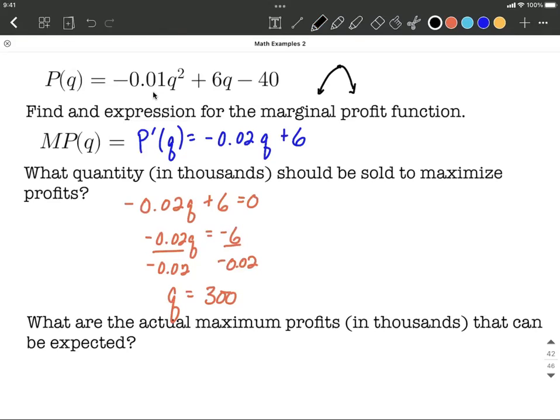All right, so pretty sure Q equals 300 is going to be where we get a maximum value. We can also call that a critical number or critical value. And then finally, we want to find the actual maximum profits in thousands. But remember, P is in thousands already that can be expected.